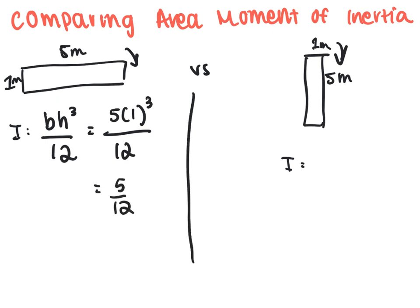For the second one, we get that our base is going to be 1, our height is 5, and 5 cubed all over 12. So we get it's going to be 125 over 12.